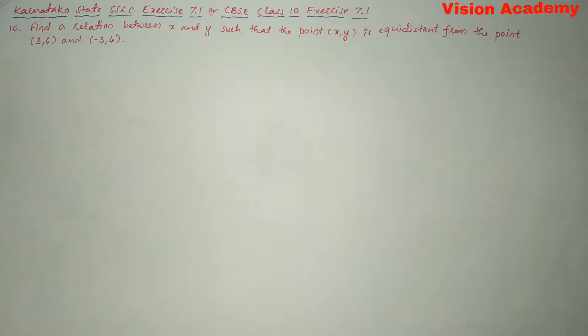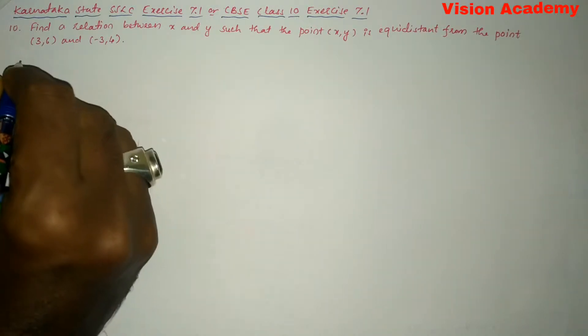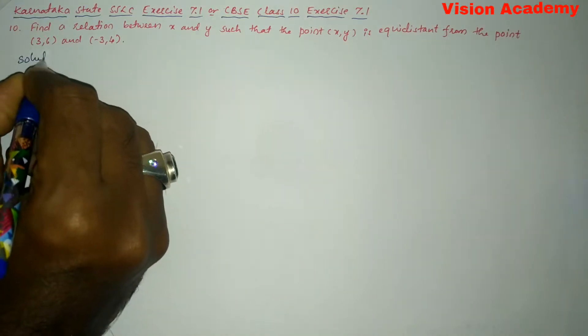Find a relation between X and Y such that the point (X, Y) is equidistant from the point (3, 6) and (-3, 4). Now, let us find the solution for the given problem.